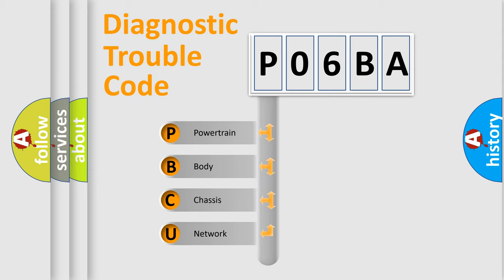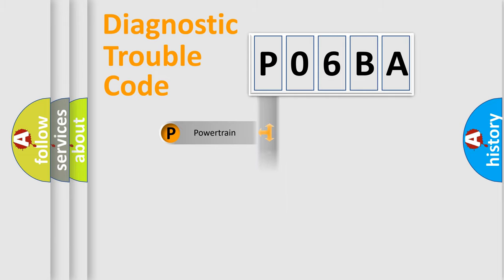We divide the electric system of automobile into four basic units: Powertrain, Body, Chassis, and Network. This distribution is defined in the first character code.